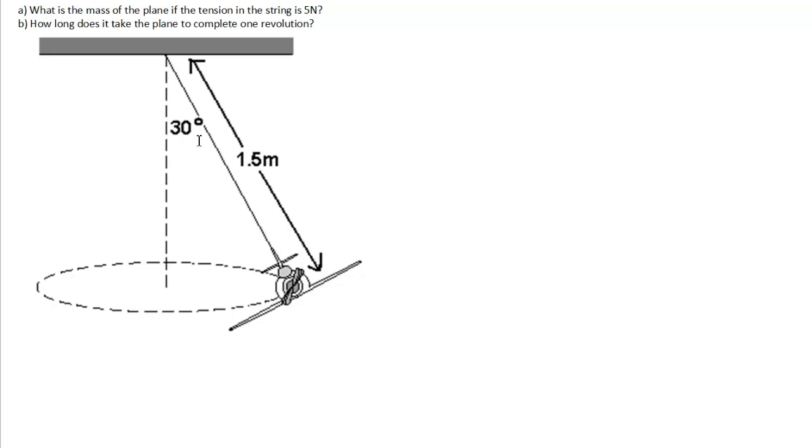The string is at an angle of 30 degrees to the vertical. The plane is in motion, as represented by this dotted line, moving in a circle around and around. And the length of the string is 1.5 meters.